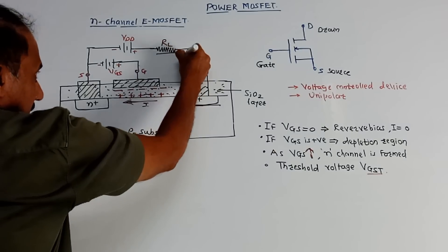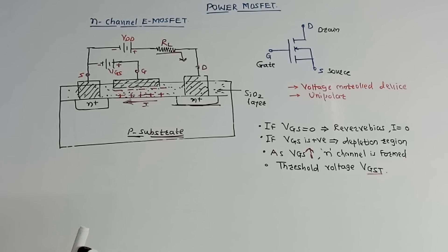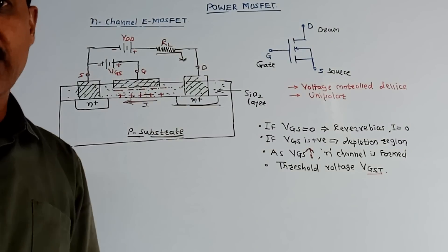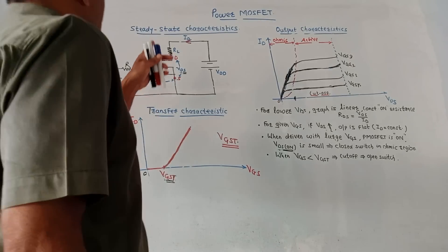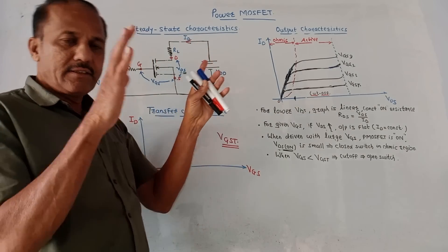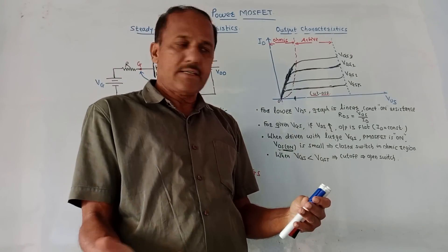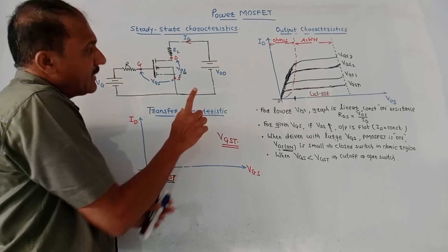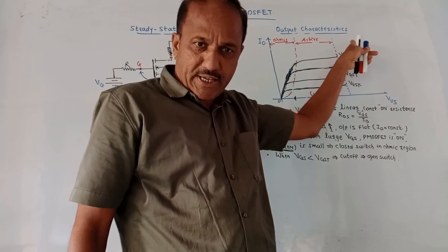So current through RL will flow. This completes the construction and working of N-channel Enhancement MOSFET. Now we will discuss steady-state characteristics. There are two types: one is transfer characteristic and another is output characteristic.